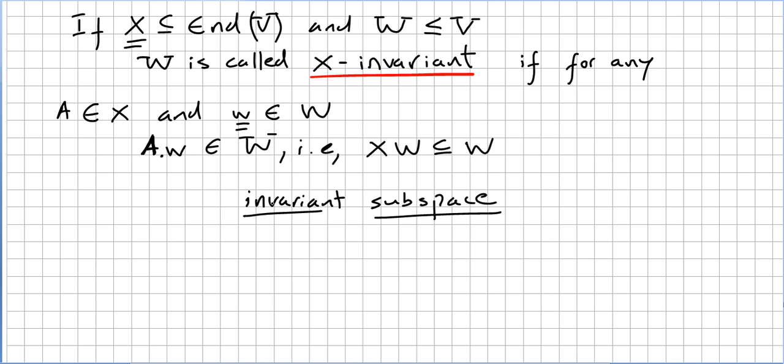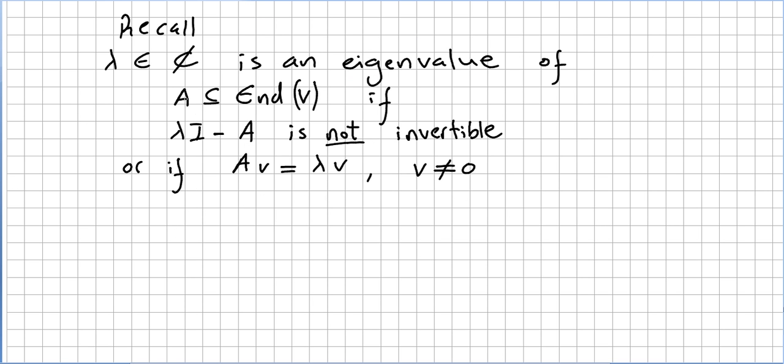And it's obvious that now this is going to be linked with the theory of eigenvalues and eigenvectors. So we quickly recall this very well-known fact: if lambda is a complex number and if this lambda is an eigenvalue of A, where A is in the endomorphisms, then lambda I minus A, that's the way you take the eigenvalues. So lambda will be an eigenvalue if this is not invertible.